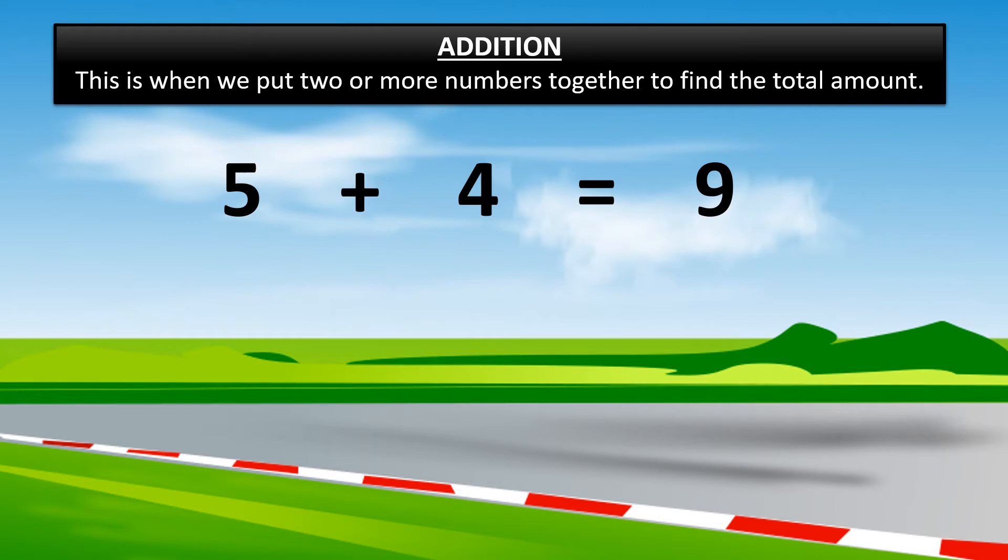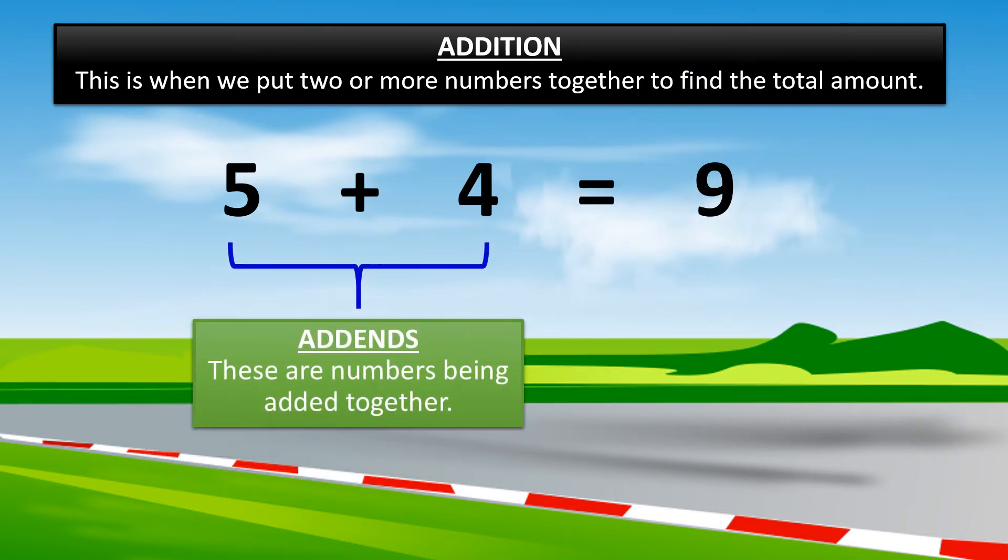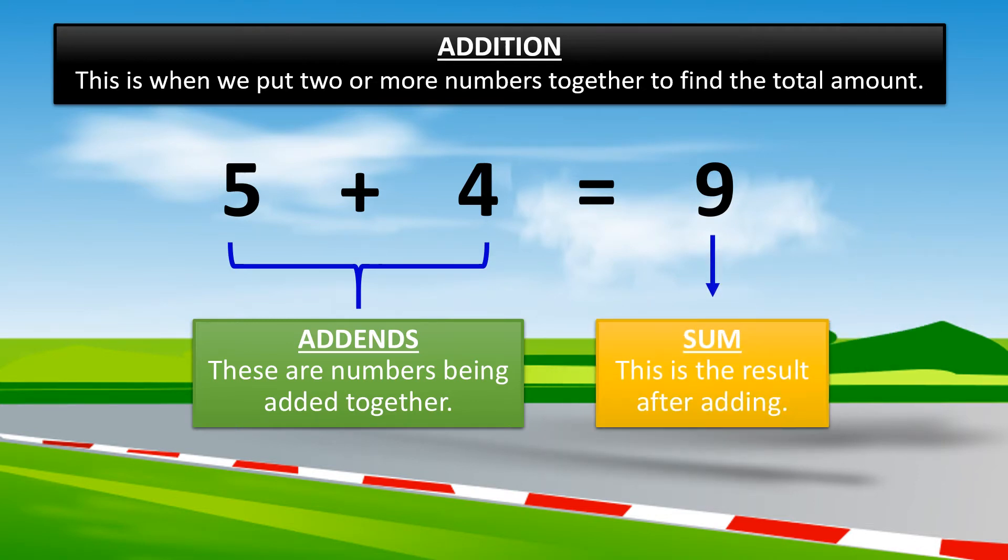I understand so far. Good. Let me teach you some more. Five and four are called addends. These are the numbers being added together. Our sum is nine. The sum is the result after adding.